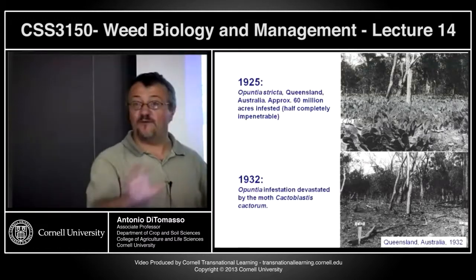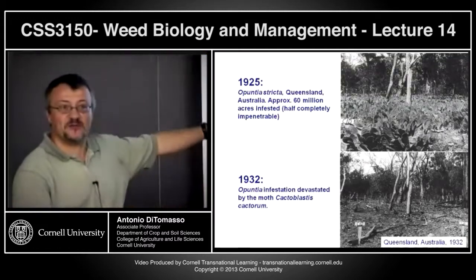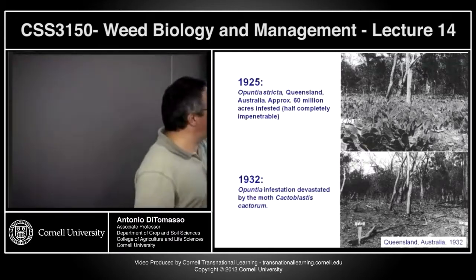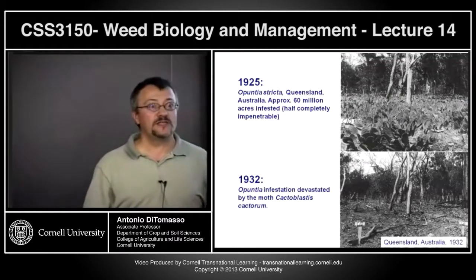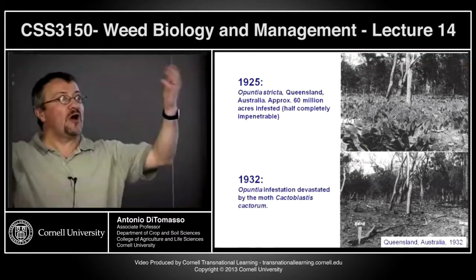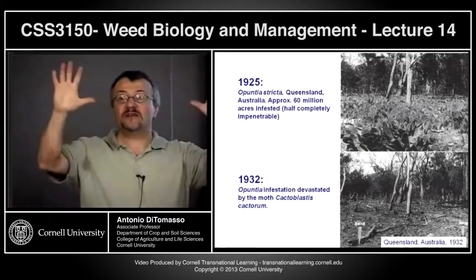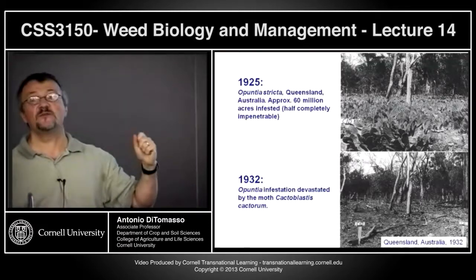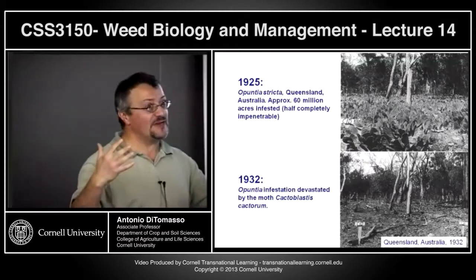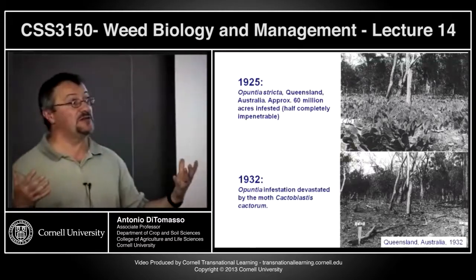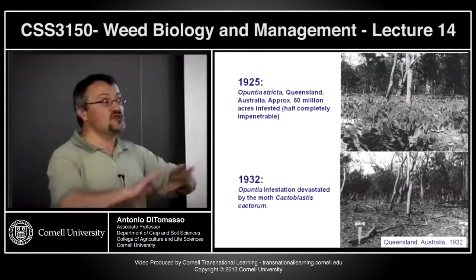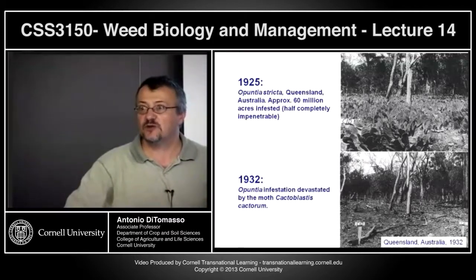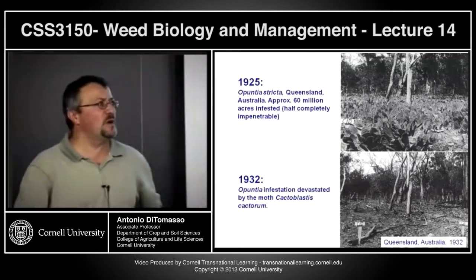One of the early success stories: Queensland, Australia, 1925 - prickly pear, Opuntia, was a real problem. It was brought over from the Mediterranean by settlers, probably reminiscent of their homelands. It got completely out of hand and occupied 25 million acres over a five to six year period. It's an extraordinary example of what can happen with an introduced plant.